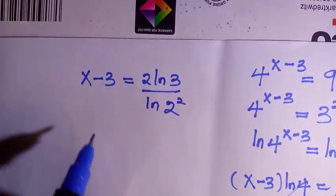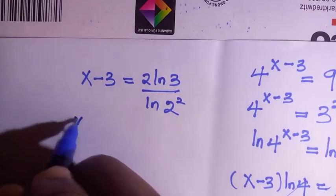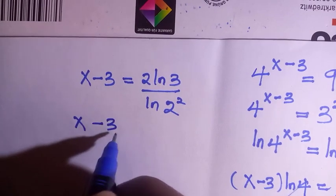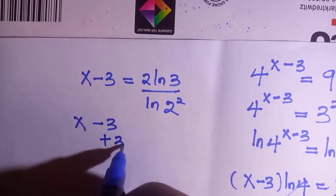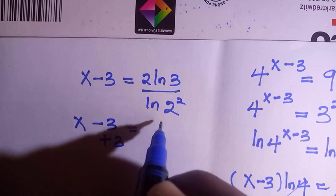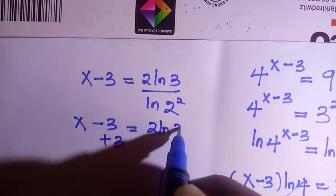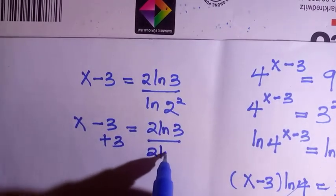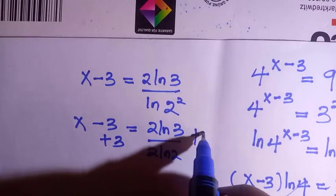So 4 is 2 to the power of 2. And by transferring 3 to the other side, let's say I add 3 to both sides. Then we have this as 2 ln of 3 divided by, if 2 comes down again, we have 2 ln 2 plus 3.